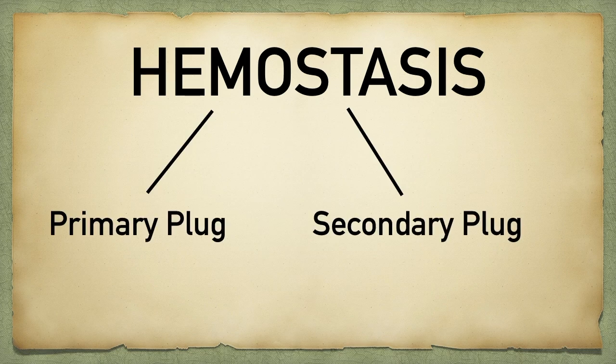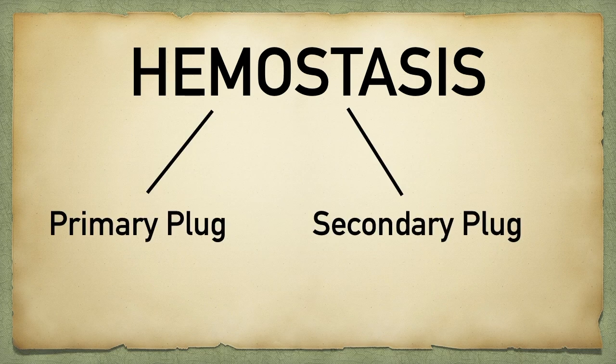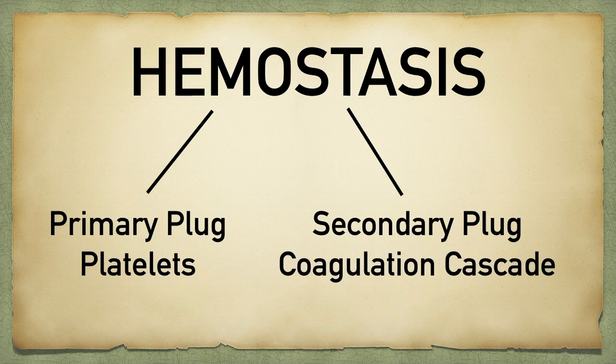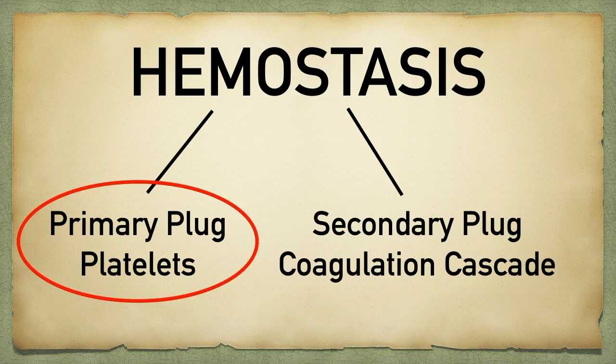There are two phases to hemostasis. The primary phase involves forming a primary plug using platelets — this is a quick way for the body to form a clot after injury to a blood vessel. The secondary phase involves the coagulation cascade, which will further solidify and strengthen that initial primary platelet plug. Today we are going to focus on primary hemostasis, which is the formation of a platelet plug.